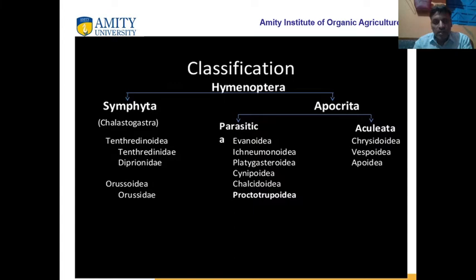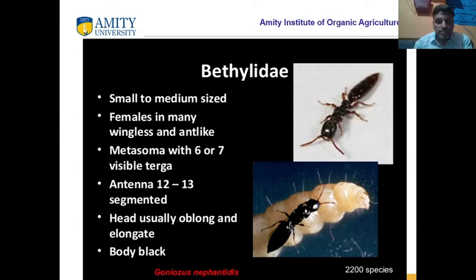The classification of Hymenoptera already discussed: two suborders, Symphyta and Apocryta. Symphyta has different superfamilies and families. Parasitica has different superfamilies, and Aculeata has different superfamilies. Now Apocryta, which is the suborder, continues with further families.